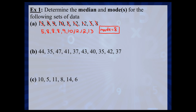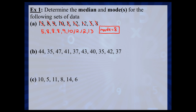For the median, I find it easier to determine it by starting at the outside of the data set and working in. Go in by one, go in by two, go in by three numbers, go in by four numbers — and I can see the middle of the data set is 9. Therefore, my median is equal to 9.